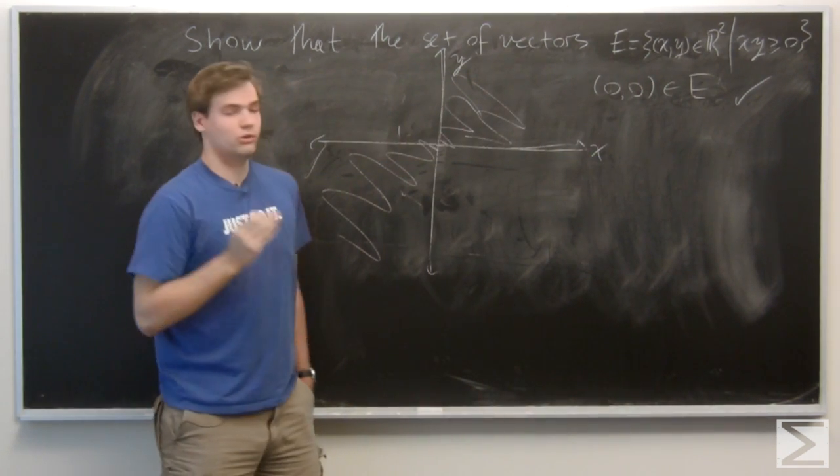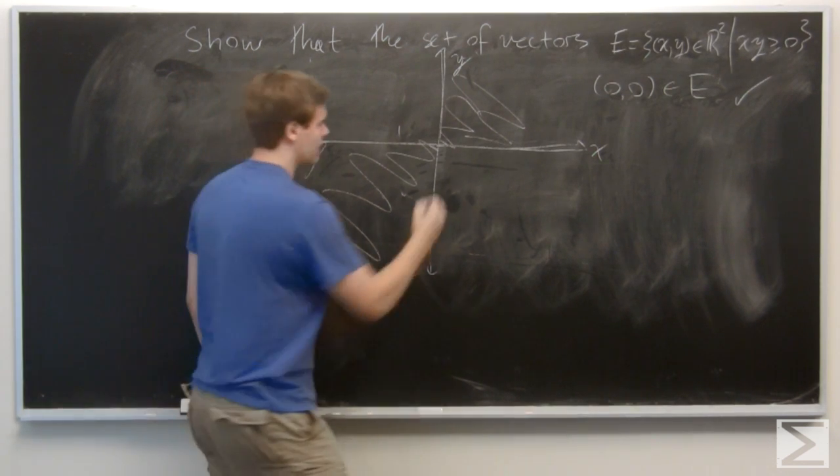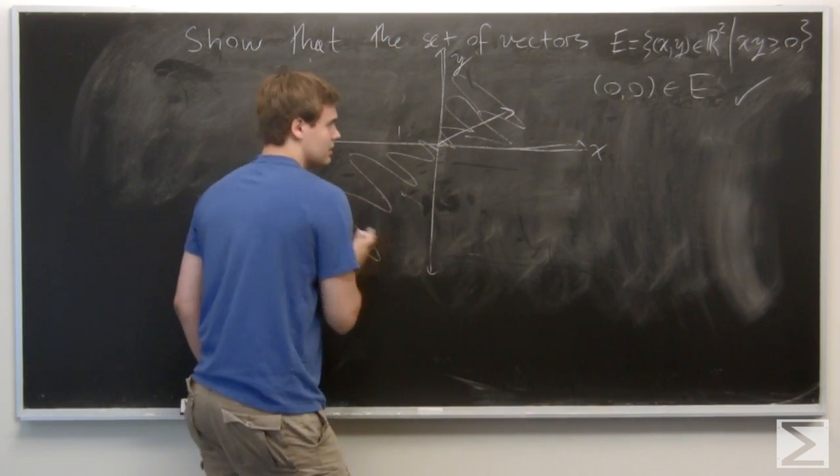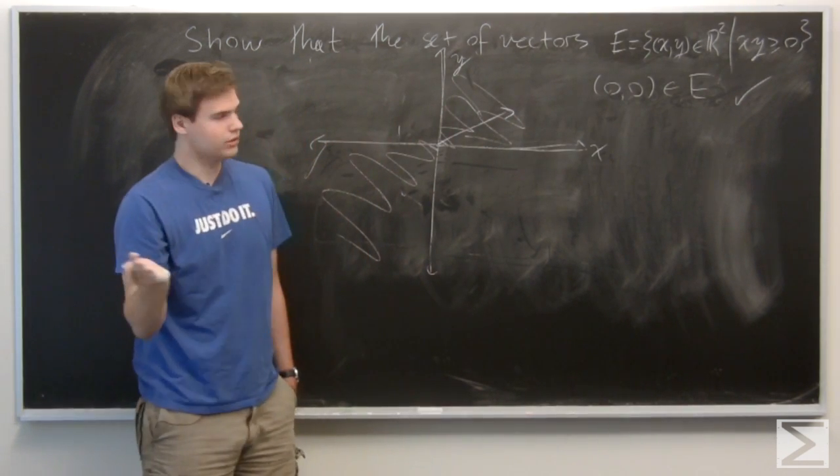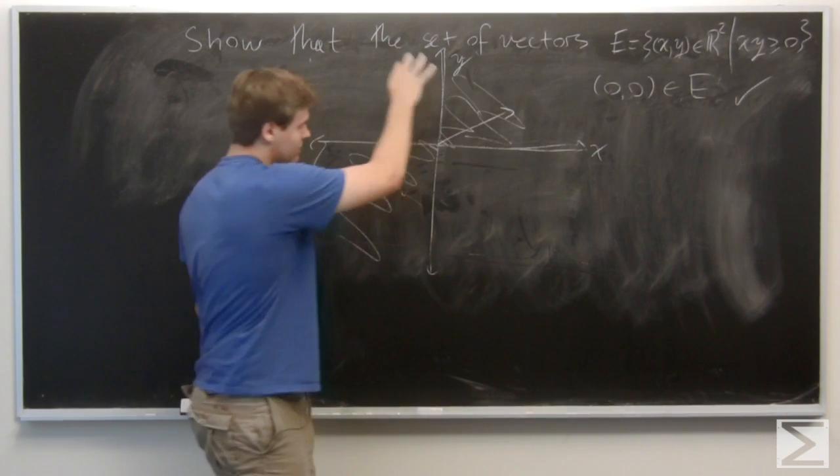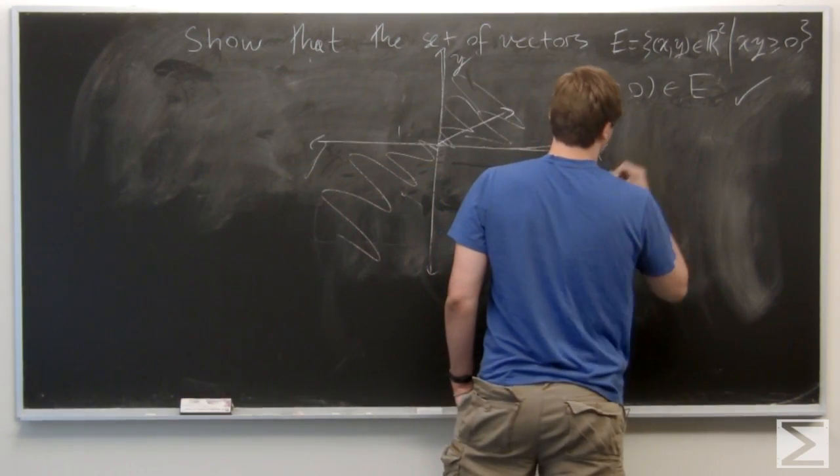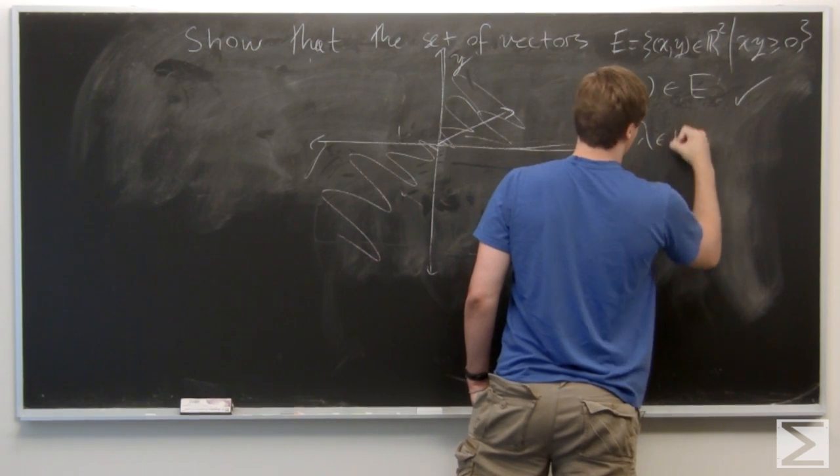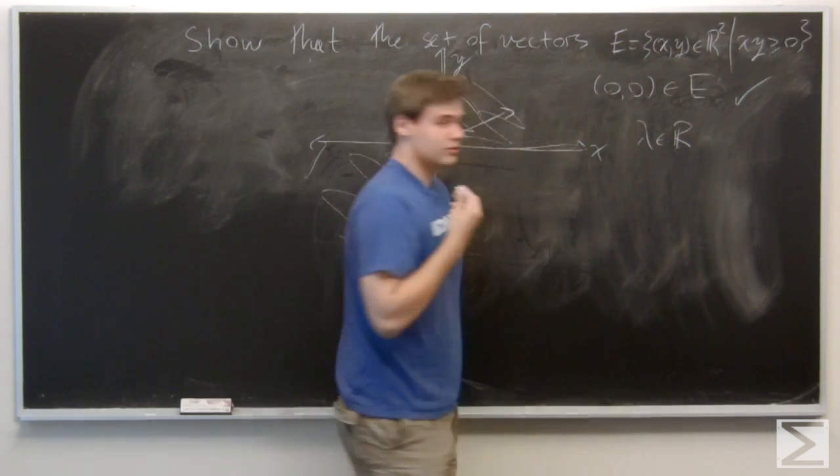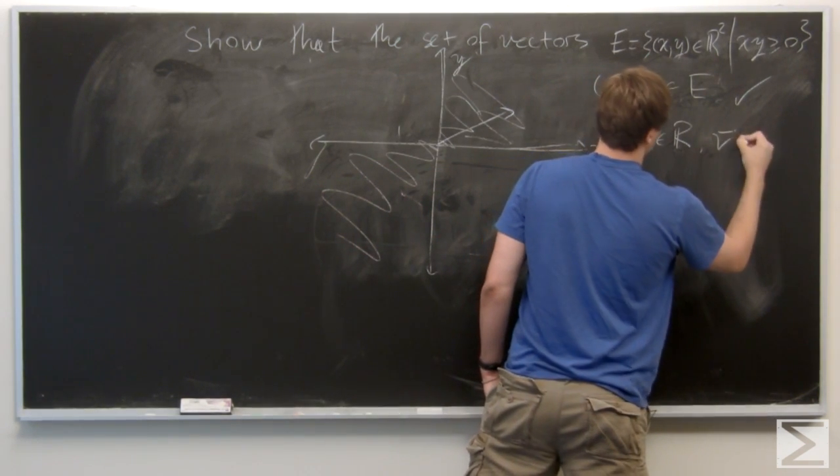And now, we're going to show it's closed under scalar multiplication. So intuitively, this just means if you take any vector in here and you scale it by any amount, it's going to be back in here again, which we can geometrically see, but we want to actually prove this. So let lambda be some real number, and let V be some vector in E.